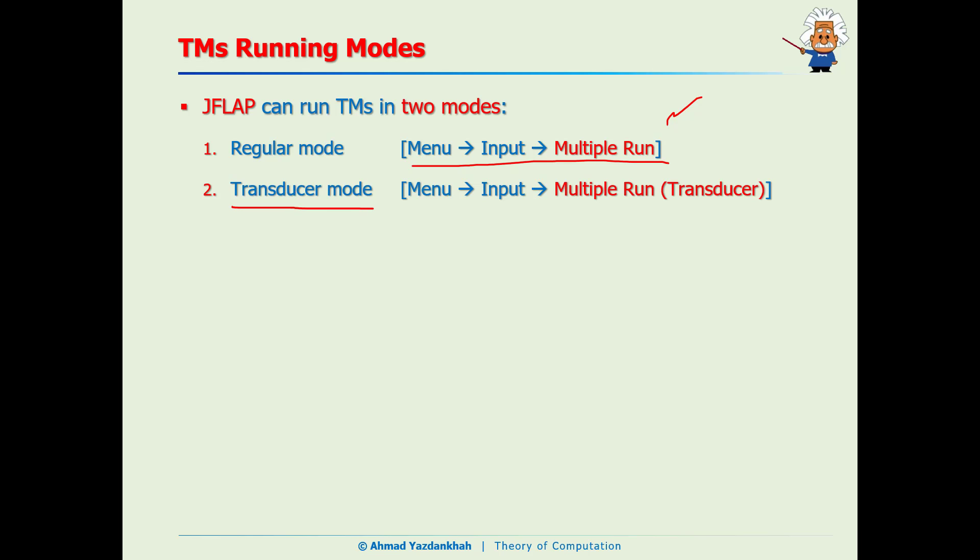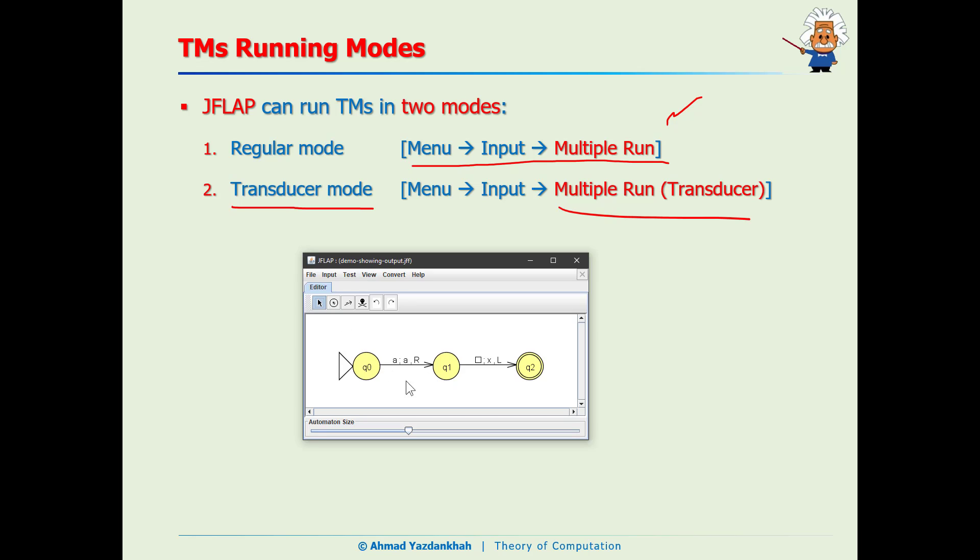Let me bring up my JFLAP. First we want to test this simple Turing machine. As you see here we have Multiple Run and Multiple Run in Transducer, both of them are accessible from the input.